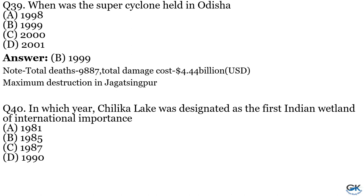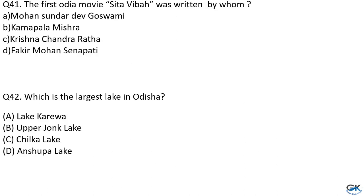Question No. 40: In which year was Chilika Lake designated as the first Indian wetland of international importance? The answer is Option A, 1981. Question No. 41: The first Odia film, Sita Bibaha, was written by whom? Option A: Mohanda Sundar Dev Goswami. Option B: Kamalapati Mishra. Option C: Krishna Chandra Ratha. Option D: Fakir Mohan Senapati. The answer is Option B, Kamalapati Mishra.